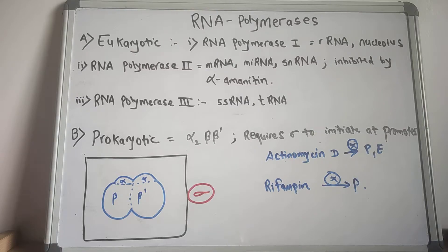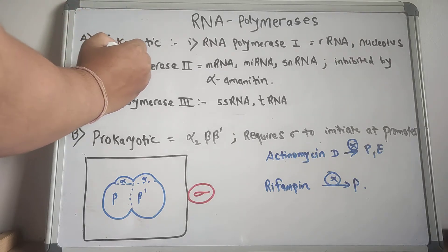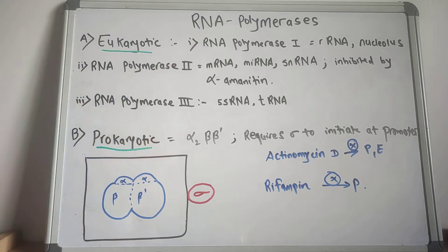Today we are going to read about the types of RNA polymerases in both eukaryotic and prokaryotic organisms. RNA polymerases are required for transcription. Before starting transcription, you should really know the types of RNA polymerases found in both eukaryotes and prokaryotes.